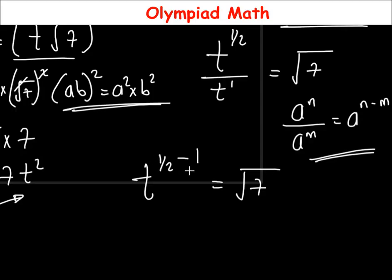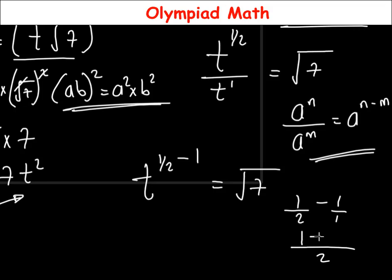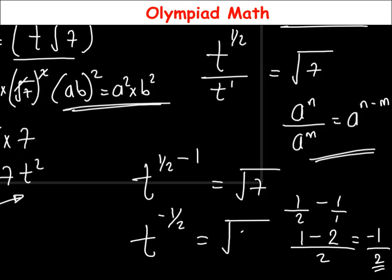Now let's solve the fractional power: 1/2 minus 1. Since 1 is written as 1/1, the common denominator of 2 and 1 is 2. So 1/2 minus 2/2 equals −1/2. Therefore, t raised to the power of negative one-half equals √7.